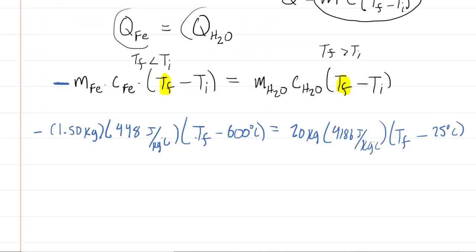So we've gone ahead and have plugged in the known values. The specific heat capacities for the iron and for water were looked up in a reference table that's probably located somewhere in this chapter of your textbook. Next, we'll do some algebra.